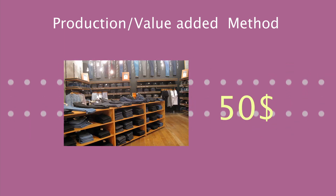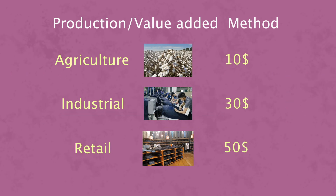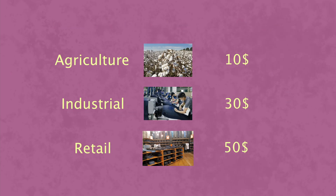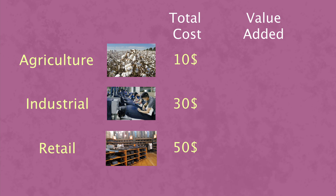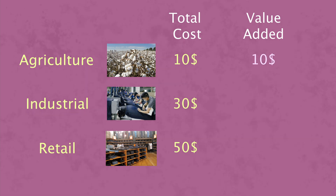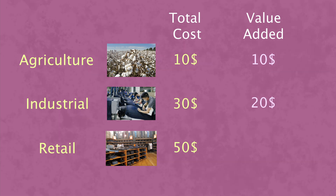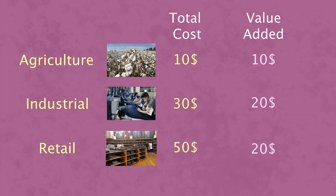The value added by each industry is calculated by subtracting the cost from the previous industry. In this case, the farmer has added a value of $10. The value added by the factory would be $30 minus $10, that is $20. Similarly, the value added by the store would be $50 minus $30, that would be $20.